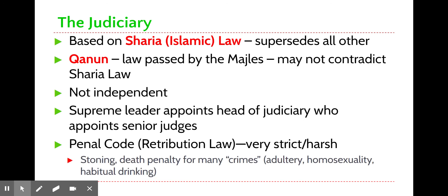The last institution to discuss is the judiciary. Not surprisingly, it is based on Sharia law — laws passed cannot contradict Sharia law, and all institutions uphold the principle of juris guardianship. It is not considered an independent judiciary. The Supreme Leader appoints the head of the judiciary, who then appoints the judges, in a typically hierarchical court system. Iran is known for having a very strict and harsh penal code, widespread harsh penalties, heavy use of the death penalty — associated with political dissidents as well as other criminals — making Iran's legal system particularly punitive.